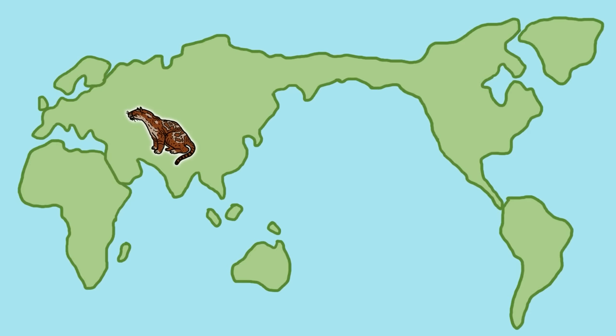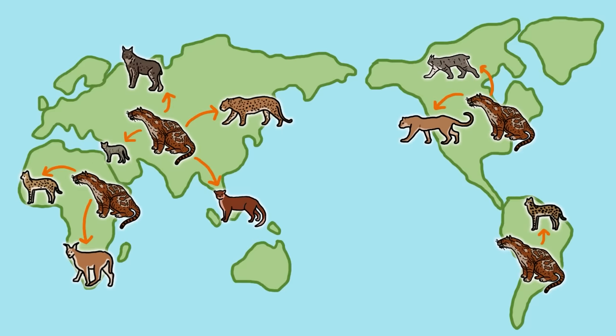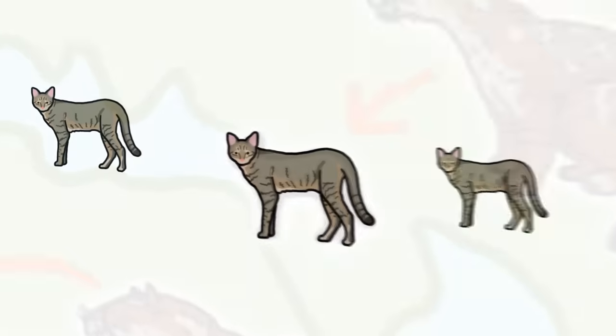Single pumas have been known to patrol nearly 1,000 square kilometers. That's as big an area as 200,000 American football fields. That urge to roam drove early cats over land bridges into new worlds, and species diverged, many of which we'd recognize today.